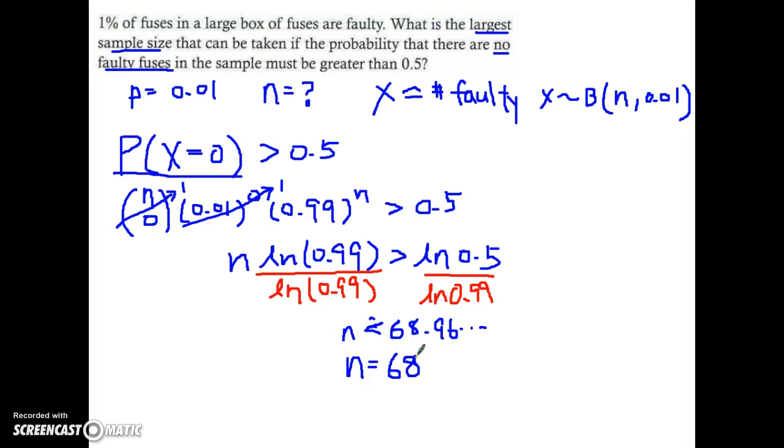Okay and that's it. Now if you think about this, let's try to again put this into context. What have we just found here? If you think about this, they are saying that the largest sample size for the probability that have no faulty fuses must be greater than 0.5.